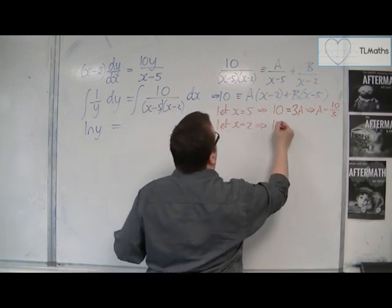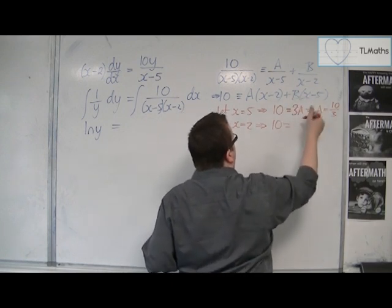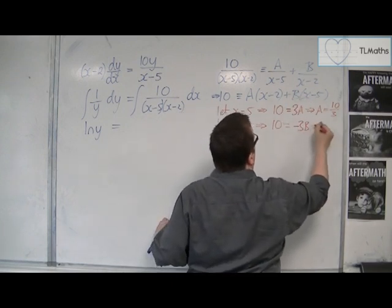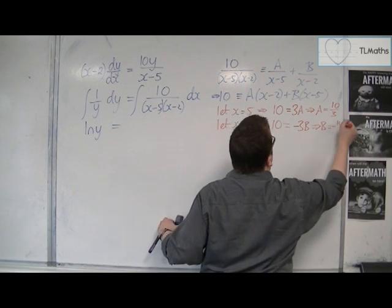And if we let x be 2, then we're going to get 10 is equal to 2 take away 5. So, minus 3b. And so, b has to be minus 10 thirds.